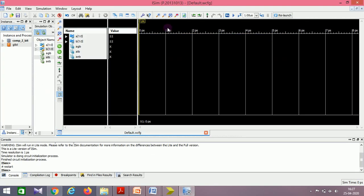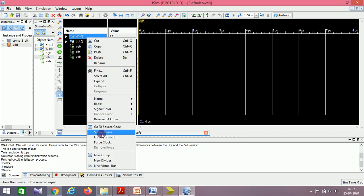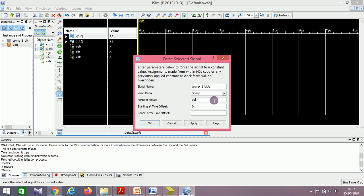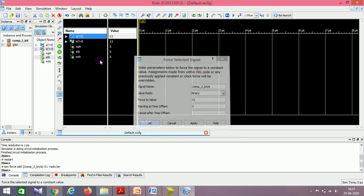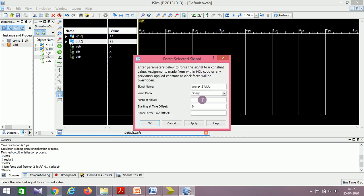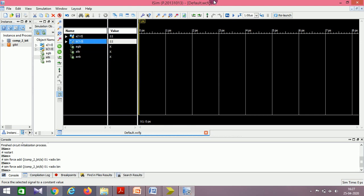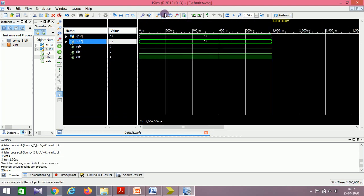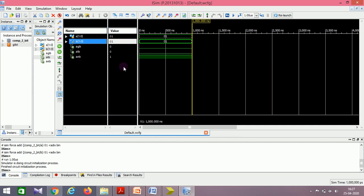In the simulation, I will restart it. Give the values to a—a is 2-bit, make sure you're giving two inputs. Let me give it 01. I give the value of b to be the same value, 01. So 01, 01—aeb is made 1, alb and agb are 0.